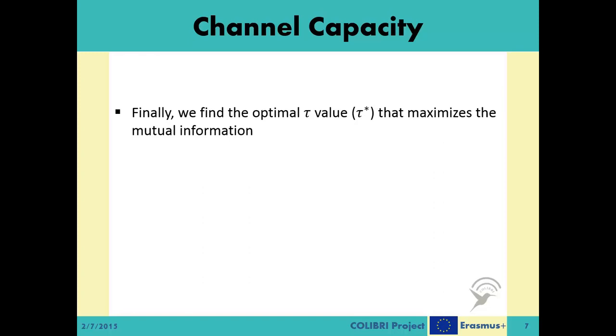Which means we have to find the optimal threshold value that maximizes the mutual information. This statement is formalized by this mathematical optimization problem, a maximization problem of the mutual information calculation over all possible tau values.